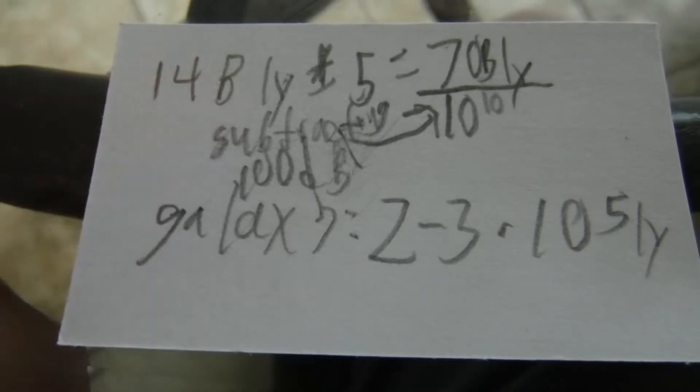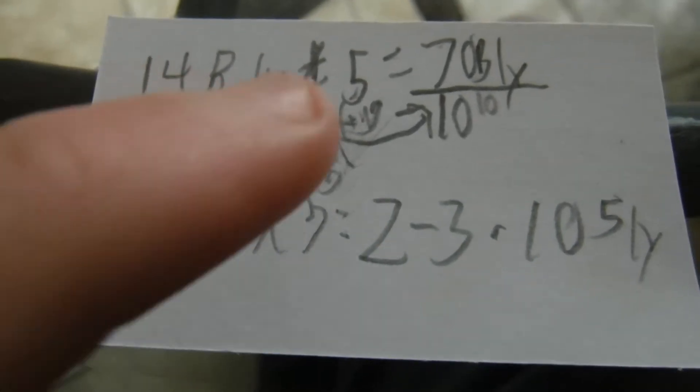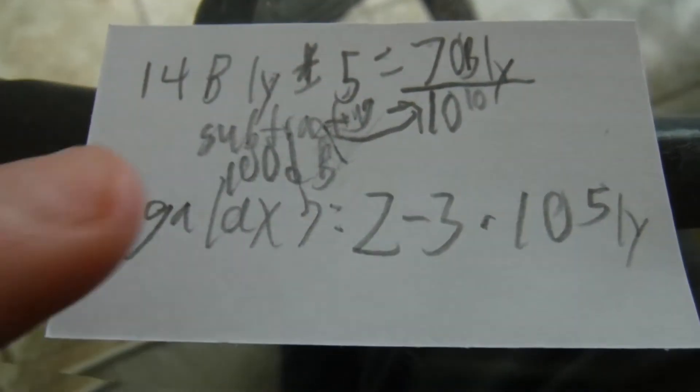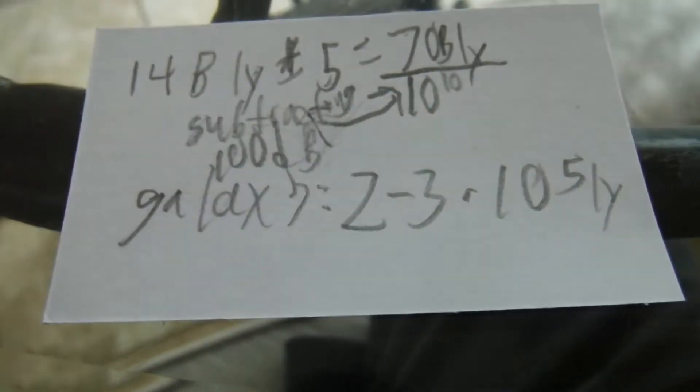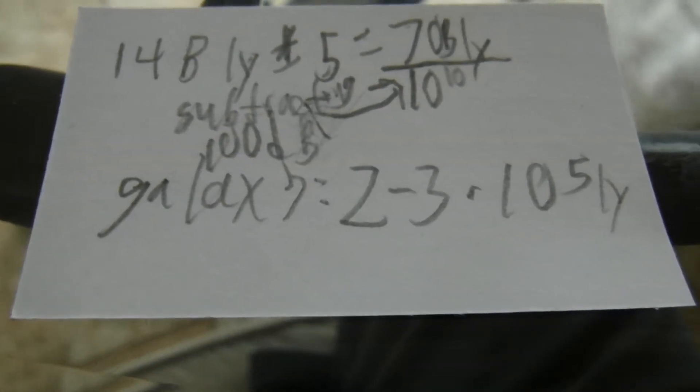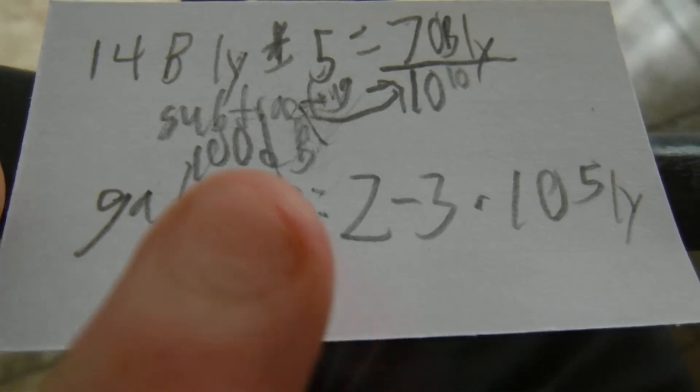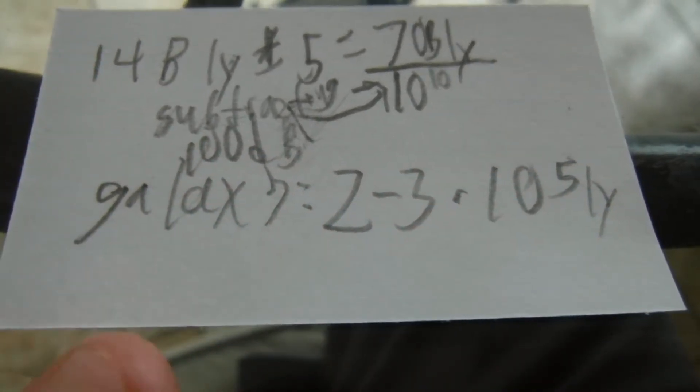So for 1,000 decibels, that's 14 billion light years times 5, which is over 10 to the power of 10 less because we are subtracting 100 decibels. A galaxy is 2 to 3 times 10 to the 5th power of light years. We divide that number by 10 billion, and we get approximately 7.75 billion light years — so about 14.6 billion light years.